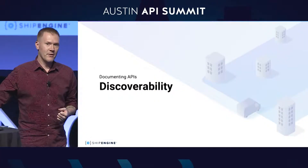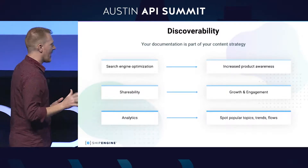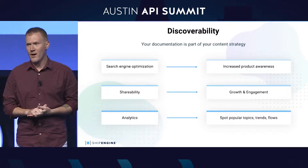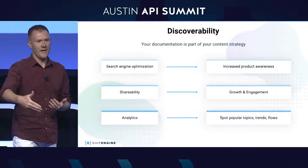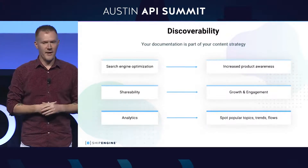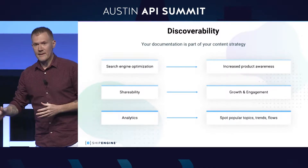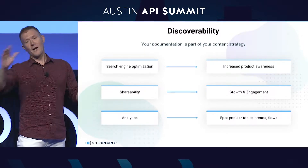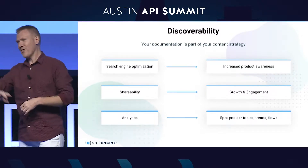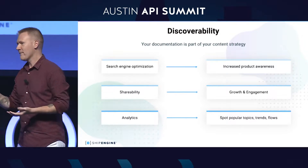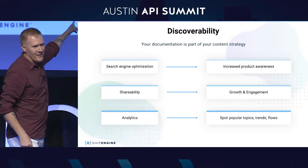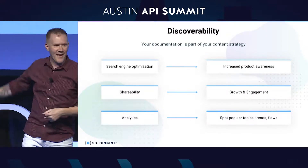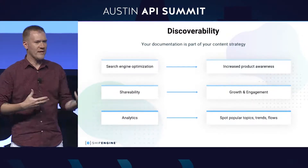Discoverability. The big thing I want to drive home here is that your docs are about more than documenting your product — they are part of your content strategy. This is especially true if you're a public API that you're selling to customers. Go talk to your marketing department and you'll find they have a whole content strategy: every blog article, every page on the website is optimized for SEO, for shareability on social media, and has analytics so they can tell which things are working. You need all the same stuff in your docs.